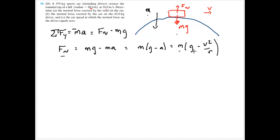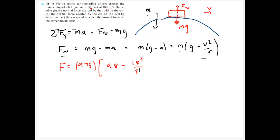The normal force of the road equals mass times (gravity minus v squared over r). As you go faster and faster, you subtract more and more — the normal force gets closer and closer to zero, and you feel more weightless. Plugging in: mass 975 kilograms, gravity 9.8, velocity 18 meters per second squared, radius 88 meters. The normal force is 5965.2 newtons.